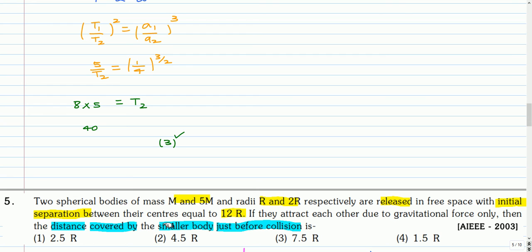This is the next question. Two spherical bodies of mass m and 5m and radii r and 2r respectively are released in free space with initial separation between their centers equal to 12r. If they attract each other due to gravitational force only, then the distance covered by the smaller body just before collision. You can pause and attempt this question.